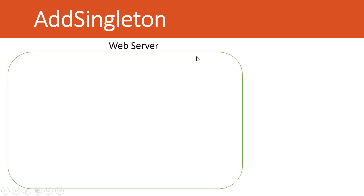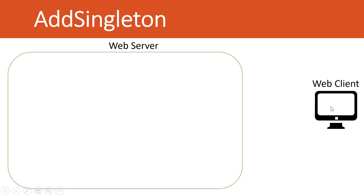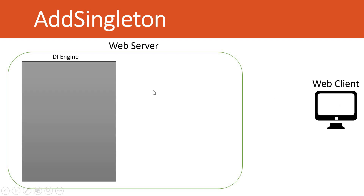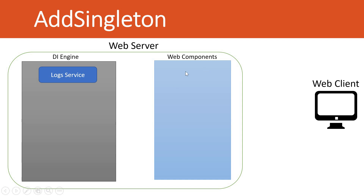Let's see what Add Singleton is. This is my web server and this is my web client. I will do a request from my web client to the web server using a Chrome or Firefox browser. The web server has code in it, and that code has a dependency injection engine. It has a registered logs service, and these are the web components. These web components will be requesting the log service instance from the DI engine.